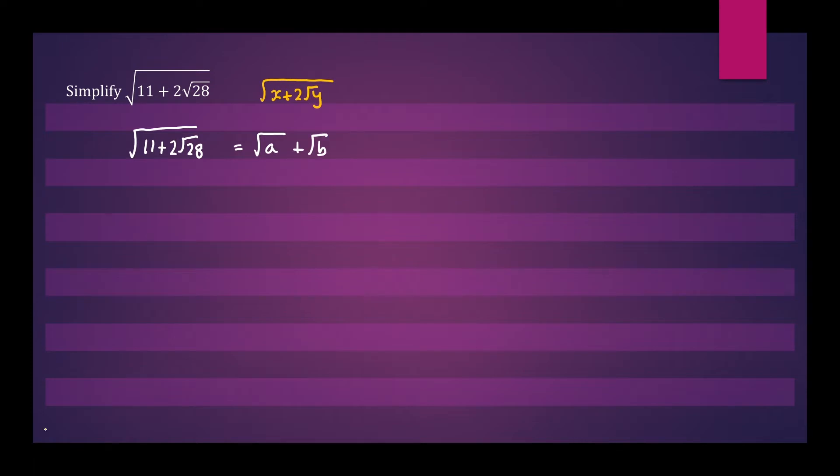So what we'll do now is square both sides. This square will cancel this square root. So we can write 11 plus 2 root 28 equals root a squared, plus 2 root a times root b, plus root b squared.